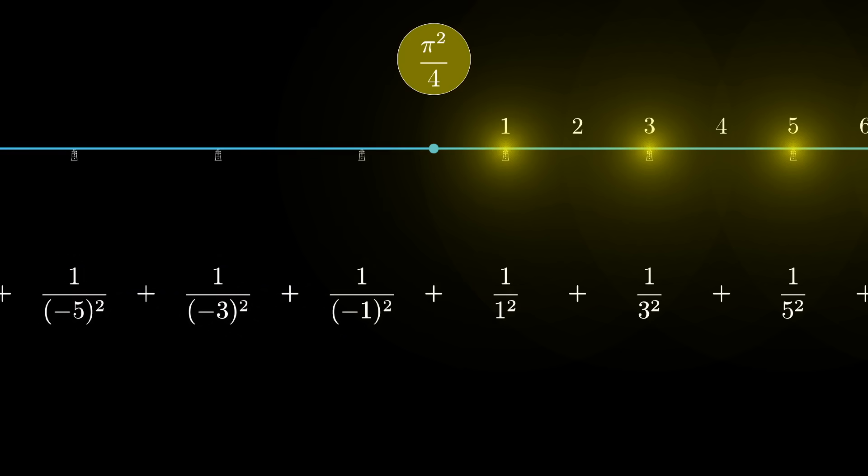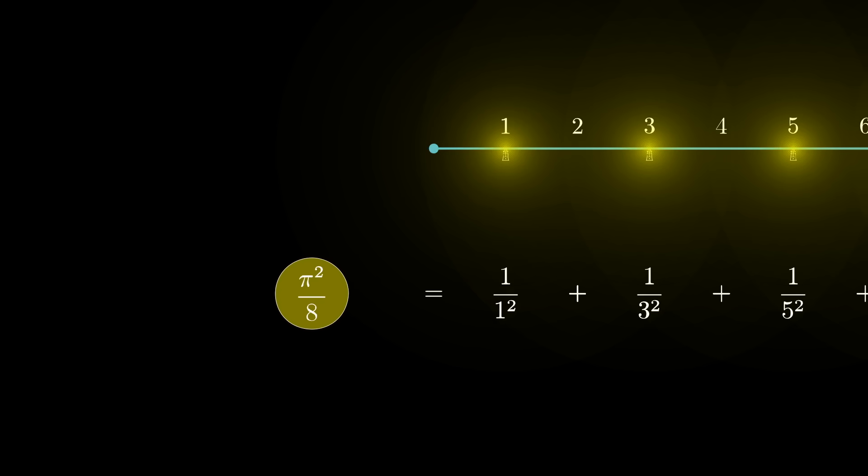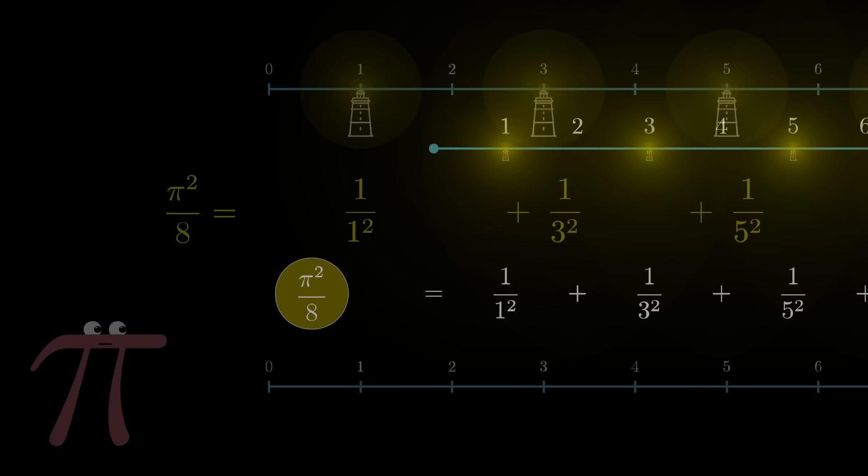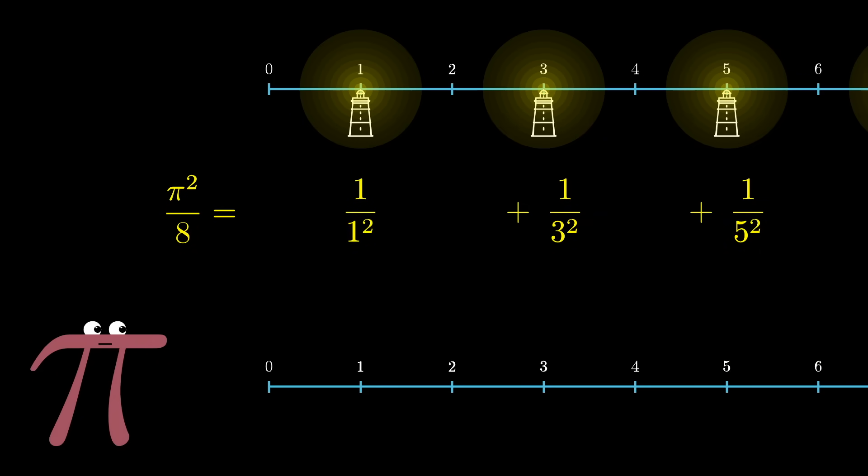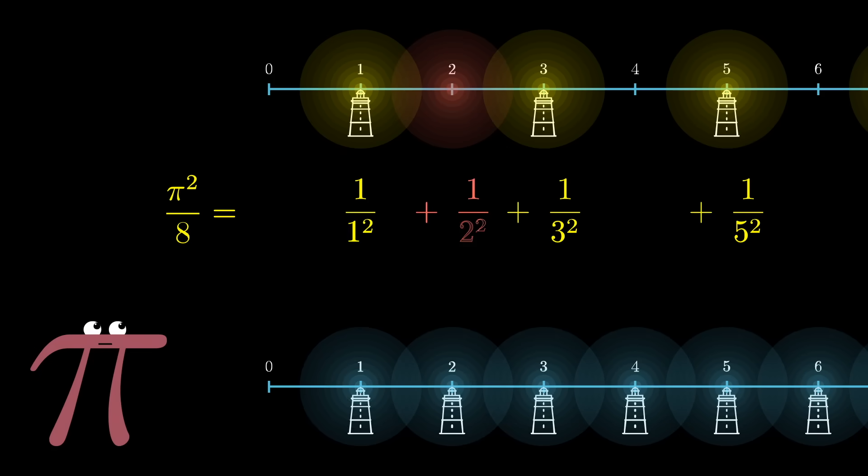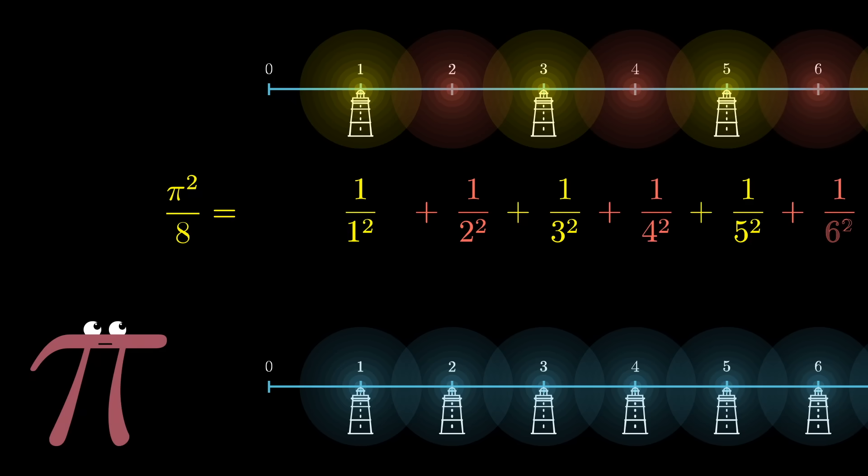First things first, let's just restrict the sum to only being the positive odd numbers, which gets us pi squared divided by 8. Now the only difference between this and the sum that we're looking for that goes over all the positive integers, odd and even, is that it's missing the sum of the reciprocals of even numbers, what I'm coloring in red up here.